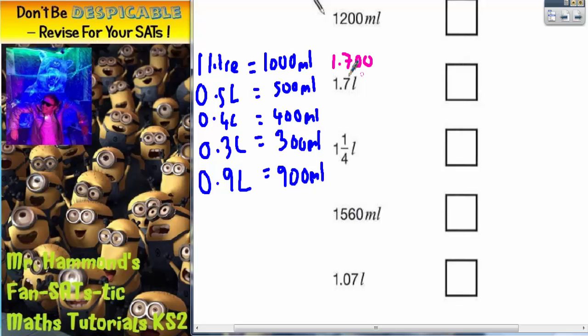So 1.7 is going to be 1,000 millilitres. And then the 0.700 is going to be 700. So it's going to be 1,700 millilitres.